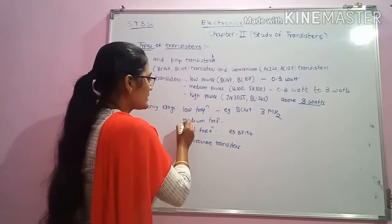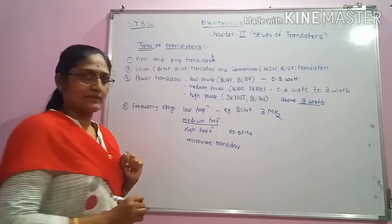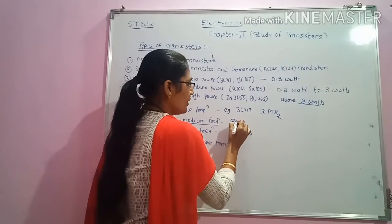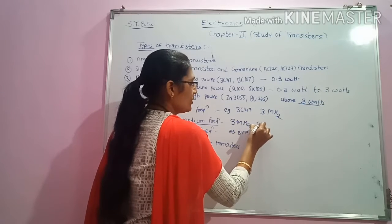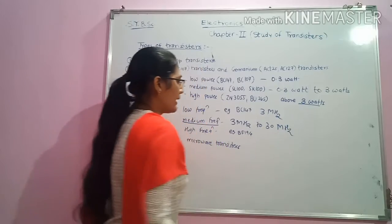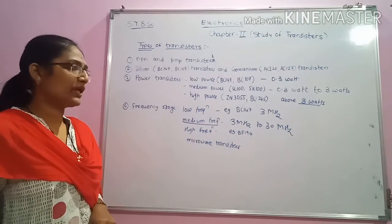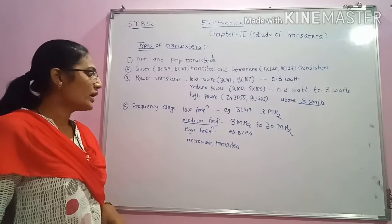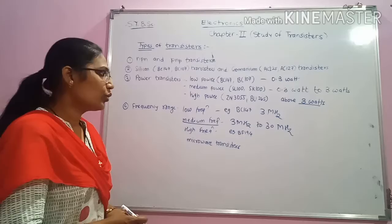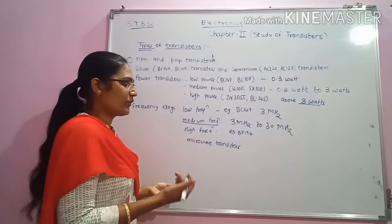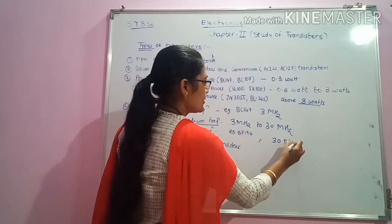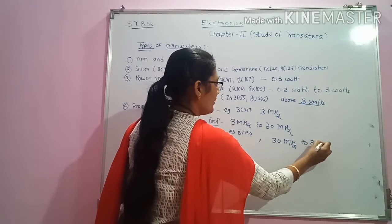Next are medium frequency transistors. Medium frequency transistors operate in the frequency range of 3 megahertz to 30 megahertz, and hence they are called medium frequency transistors. The third type are high frequency transistors, whose frequency of operation is in between 30 megahertz to 300 megahertz.